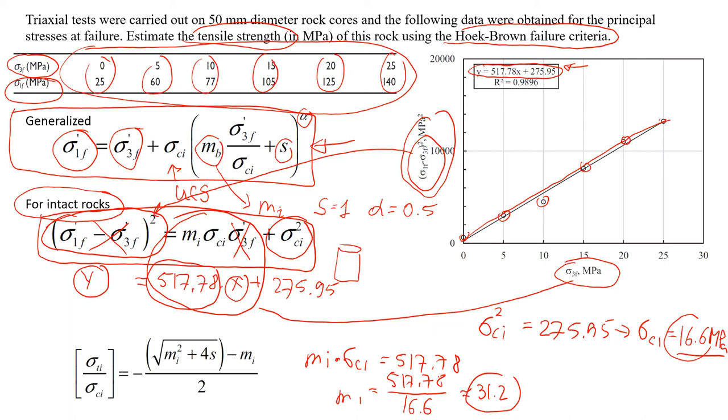So this one, mi, it actually depends on the geology. It varies with the geology of the rocks that we test. So the harder the rock, the higher mi you're going to get.